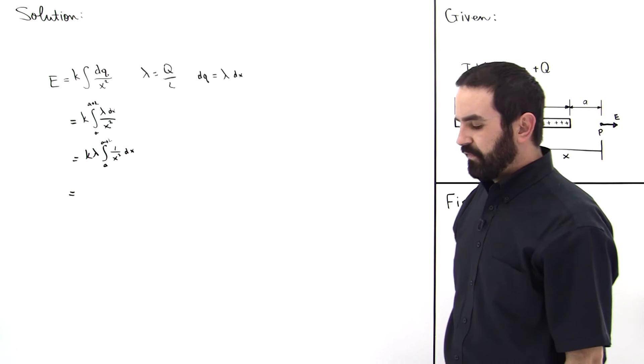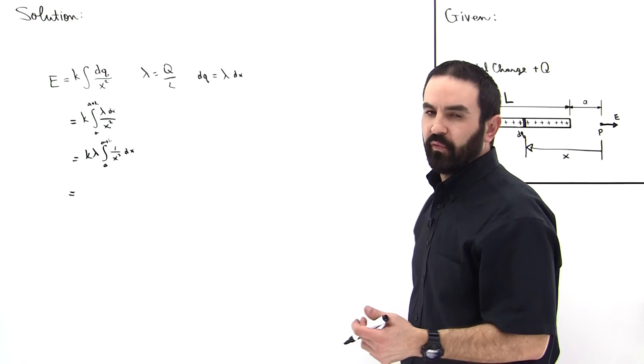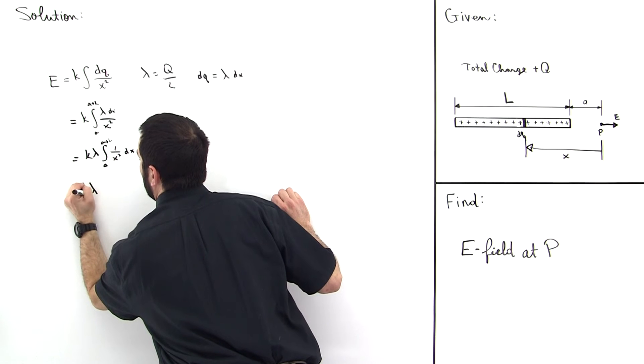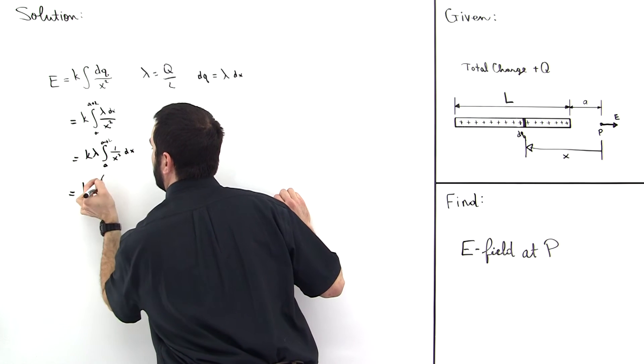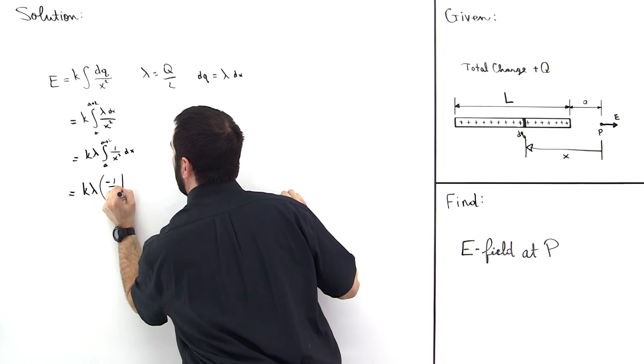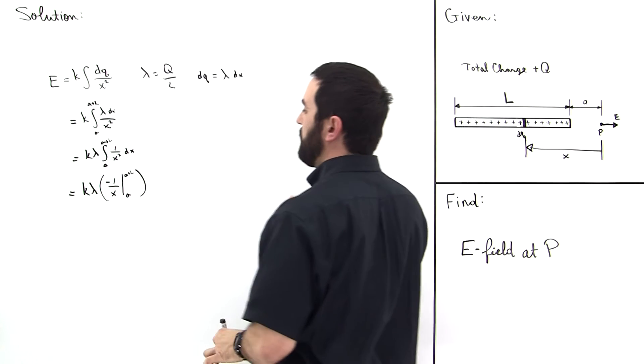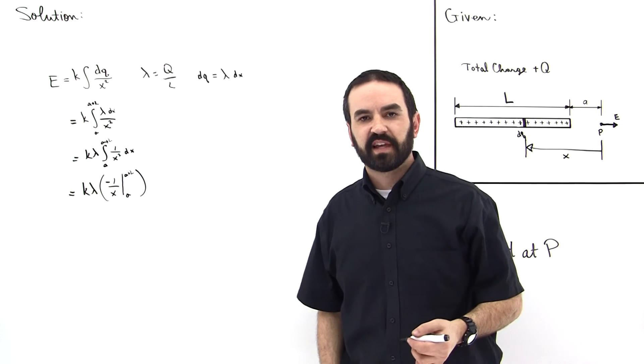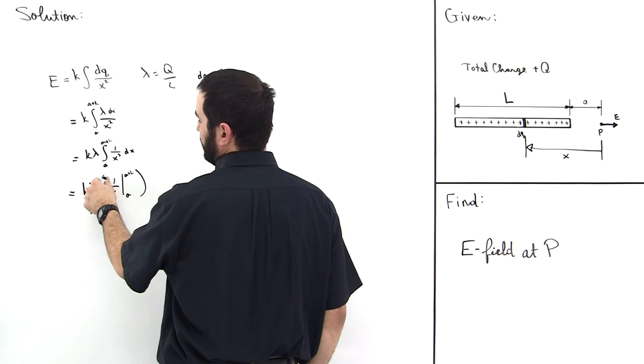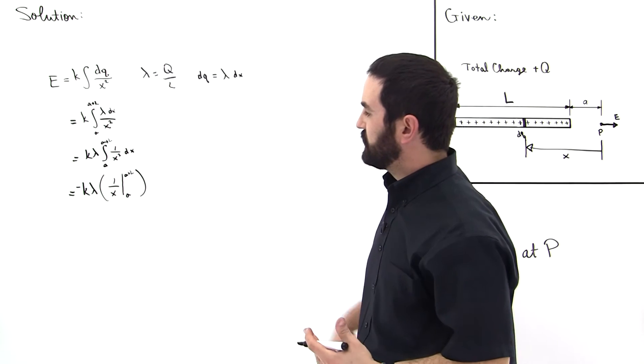If you look in your tables or use your symbolic manipulating calculator, you'll find that the antiderivative of 1 over X squared is negative 1 over X. So we have K times Lambda times negative 1 over X evaluated from A to A plus L. Any time I have a negative inside the antiderivative, I usually like to just factor that negative out. So we can just take this negative and bring it out here. Psychologically for me, it just makes it easier to evaluate this.